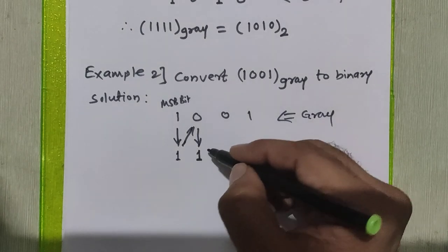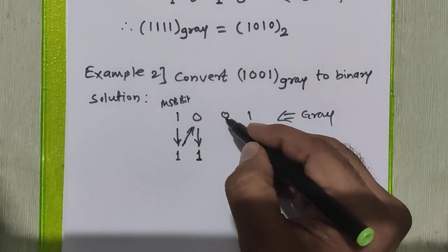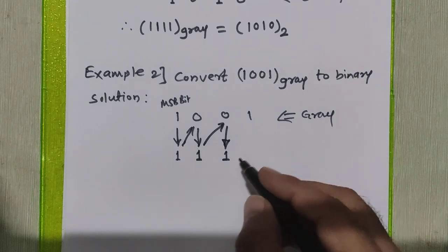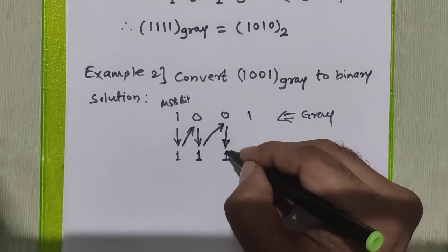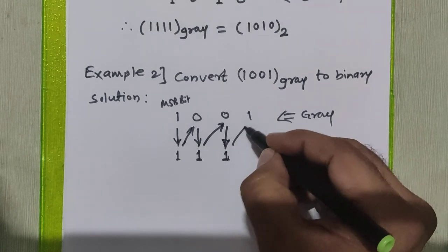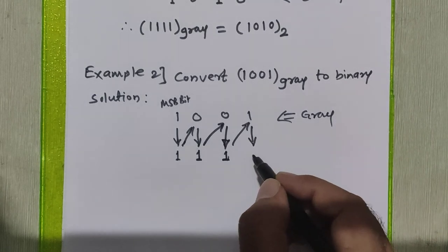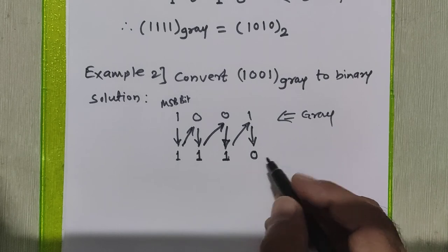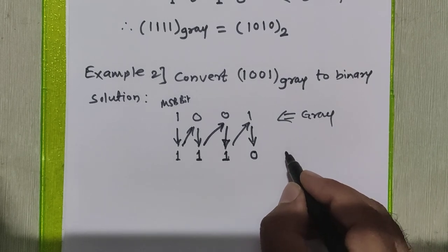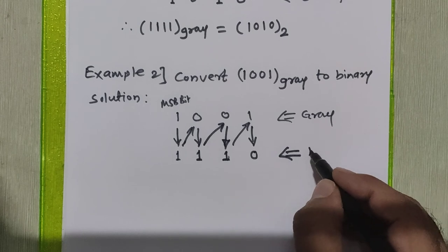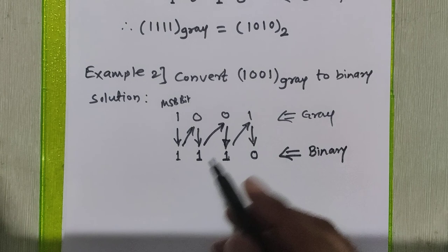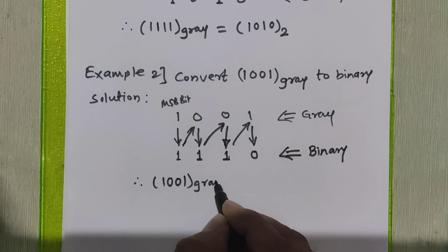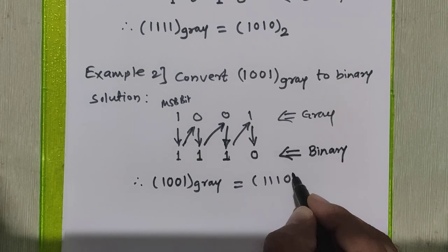We will now add the second bit of binary with the third bit of grey to get the third bit of binary — one plus zero is one. To get the last bit of binary, we add the third bit of binary with the fourth bit of grey. The sum is zero with carry one; carry is ignored whenever generated during grey to binary conversion. Therefore, 1001 in grey equals 1110 in binary.